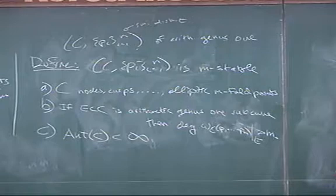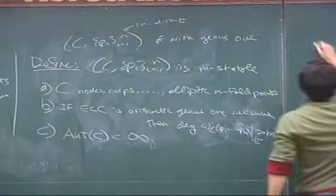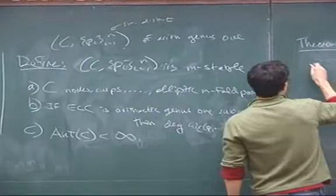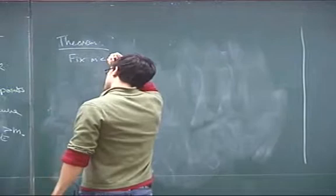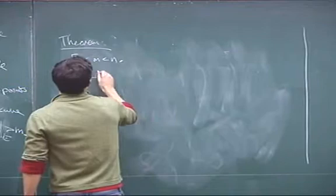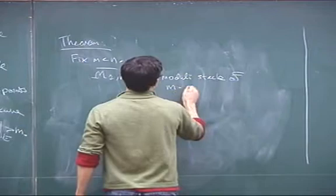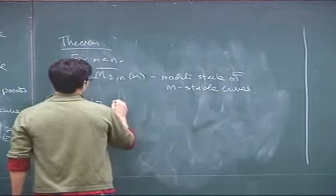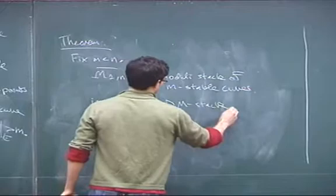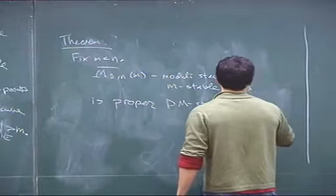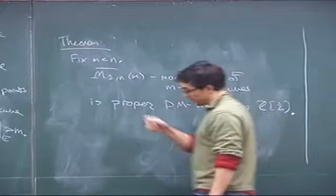The theorem is that this works. For integers M less than N, the moduli stack M_{1,n}^M of M-stable n-pointed curves of genus 1 is a proper Deligne-Mumford stack. We can work over ℂ; the whole construction works except in characteristics 2 and 3, where the deformation theory of cusps is bad, but otherwise we're fine. We have a moduli space, finite automorphism groups, and a unique limit property.